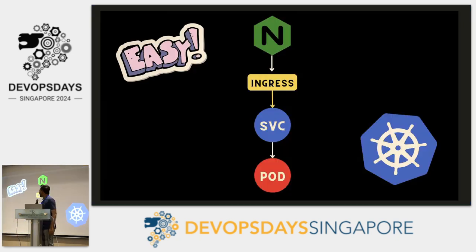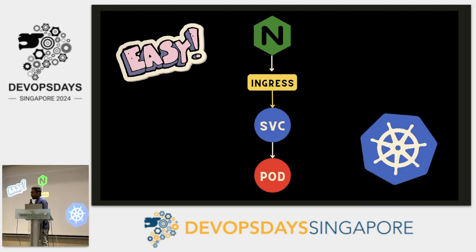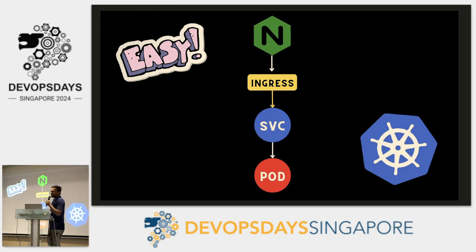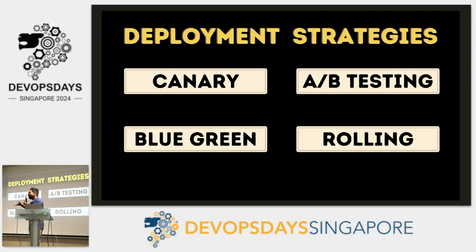I'm Abhishek, working as a GitOps product lead at Red Hat. I maintain a couple of projects with Argo and today I'll be talking about progressive delivery. How many of you have deployed applications to Kubernetes? Pretty much everyone. When I talk about deploying applications, this is what you'd see: creating a deployment, service, and just an ingress — which is pretty cool and easy.